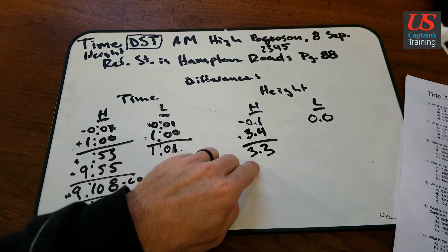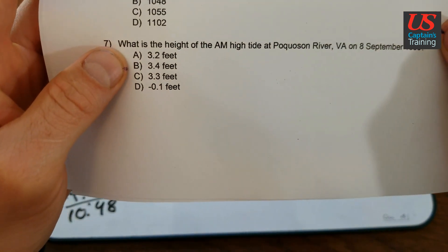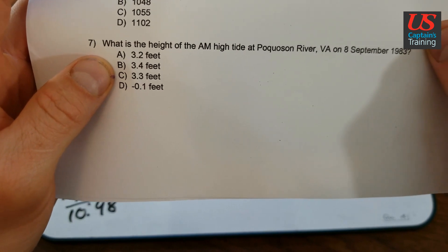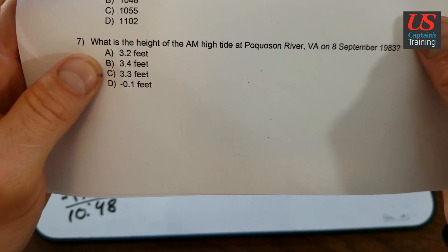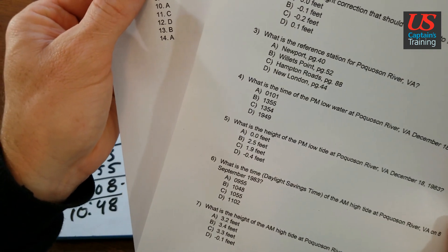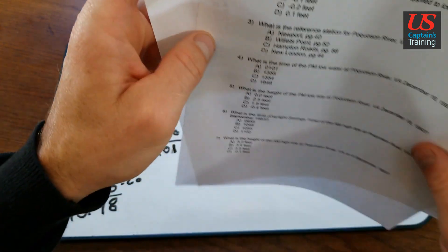Let's check it out. 3.3. And there we found it. B. Excuse me, C. 3.3 feet. C. 3.3 feet, 8th September. Problem 7 is C. Good.